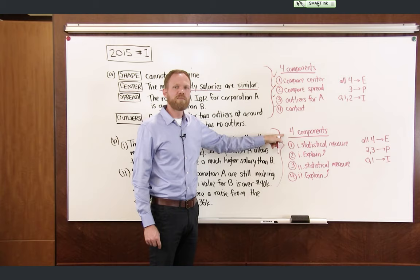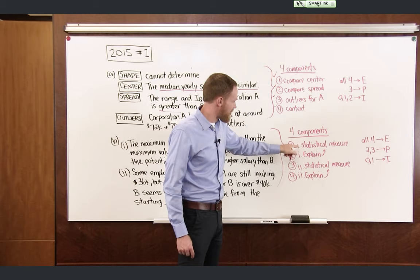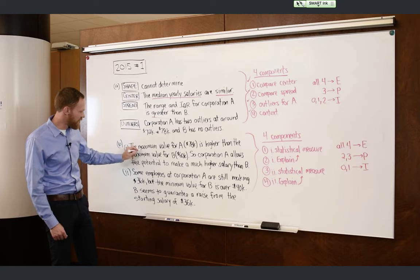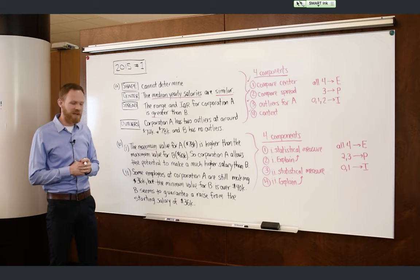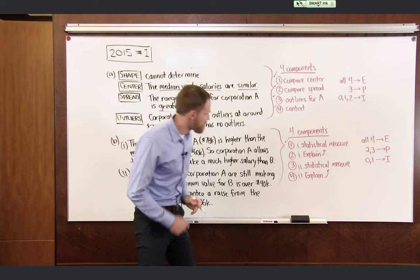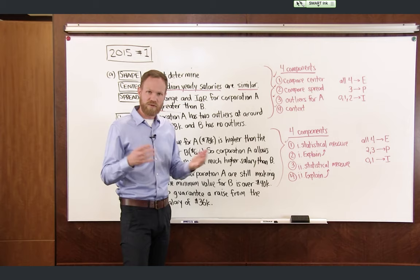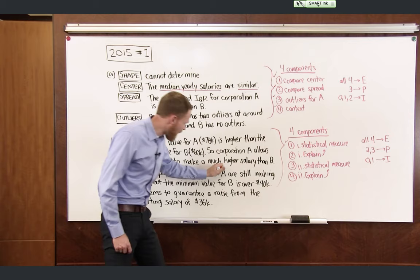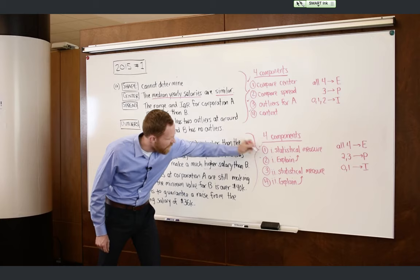For the rubric on Part B, there are again four components needed for full credit. Component one: in Part I, a statistical measure must be identified — in the model solution, that is the maximum value. Component two: explain why that statistical measure has meaning in this context — the maximum value tells us we could make a higher salary at corporation A than corporation B. Both components are satisfied.